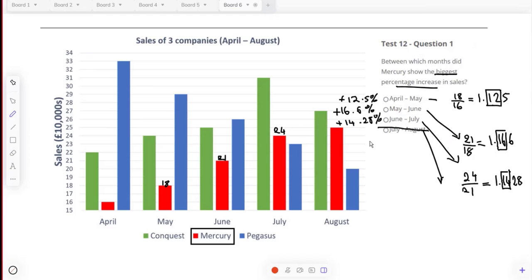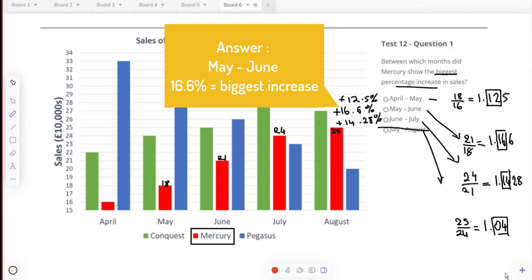Just by the eye I can tell nothing's really going to happen there. We're going up from 24 to 25, but I'll do it anyway. 25 divided by 24 gives us 1.04. That's actually only a four percent increase.